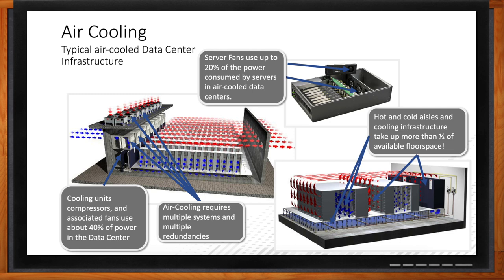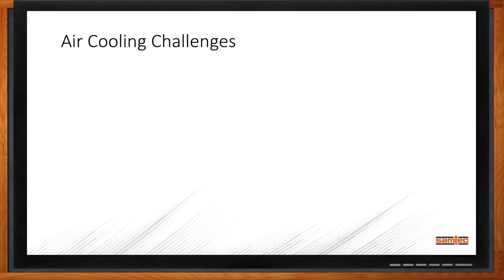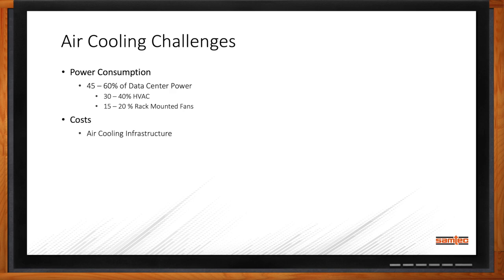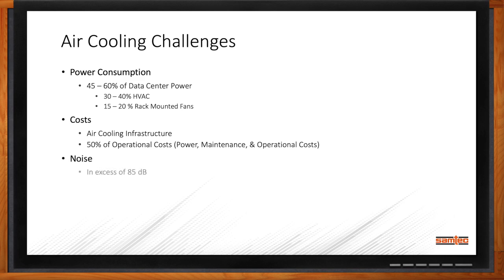Looking at the biggest challenges of air cooling: about 45 to 60 percent of a data center's power consumption is going to come from your HVAC and rack-mounted fans. The overall cost for a cooling infrastructure — just as an HVAC replacement at home can be costly, take that to industrial scale and you're adding significant cost. About 50 percent of your overall cost is going into power, maintenance, and operational costs. And that's not even mentioning the additional noise from all the fans running, which can be in excess of 85 decibels.